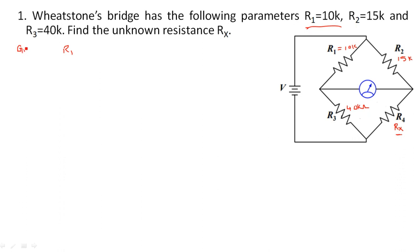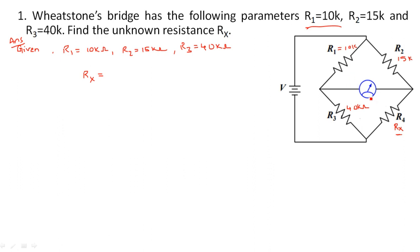It is best practice to write down the given values first. Given: R1 = 10 kΩ, R2 = 15 kΩ, R3 = 40 kΩ. The formula is Rx equals R2 times R3 divided by R1, because in a balanced Wheatstone bridge, the products of opposite resistors are equal — that is, Rx times R1 equals R2 times R3.